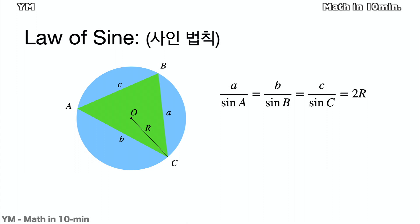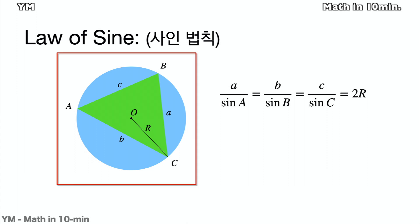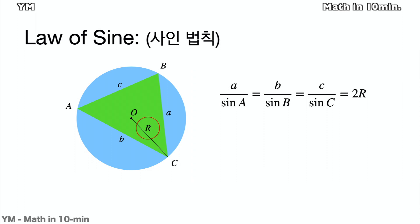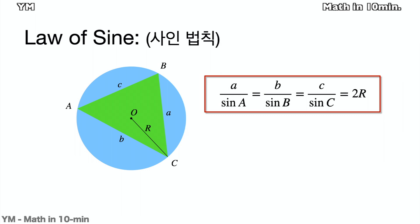Law of Sine. There is a triangle ABC and its circumscribed circle O. Suppose that the radius of this circle is R, and the triangle ABC has sides with lengths A, B, and C as pictured. Then each side's length divided by sine of each opposite angle is equal to 2R.